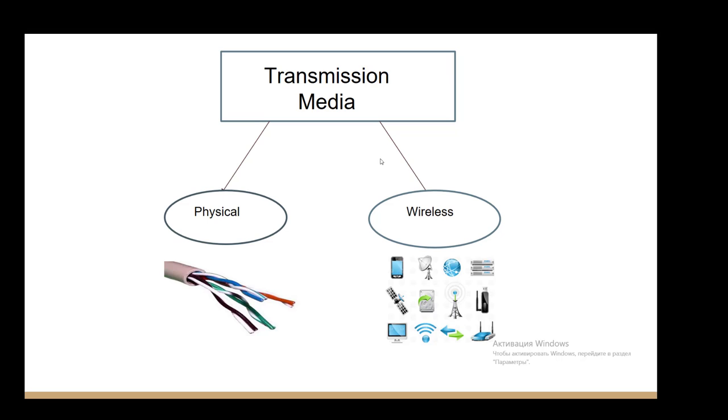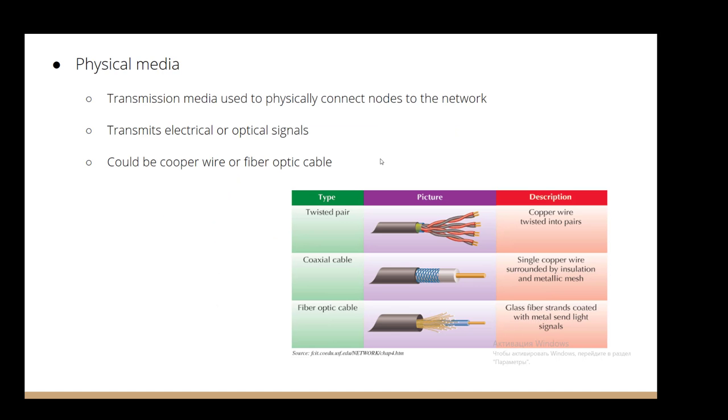So now let's explain what physical media is. Physical media has three functions. First, it's transmission media used to physically connect nodes to the network. Second function, it transmits electrical or optical signals. The third could be a ground wire. The picture here has illustrated the functions itself and we have provided its description.